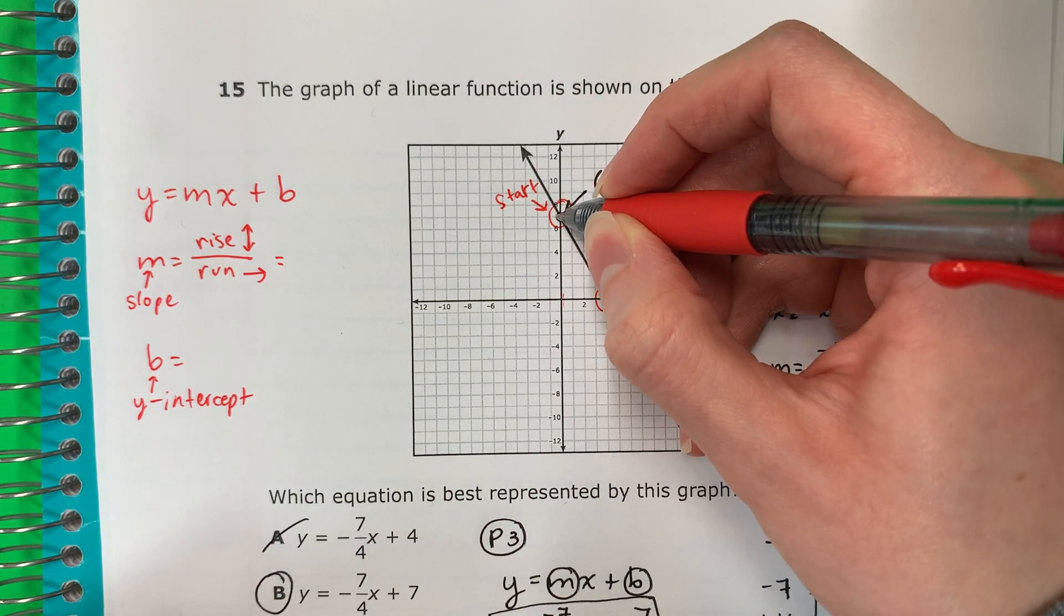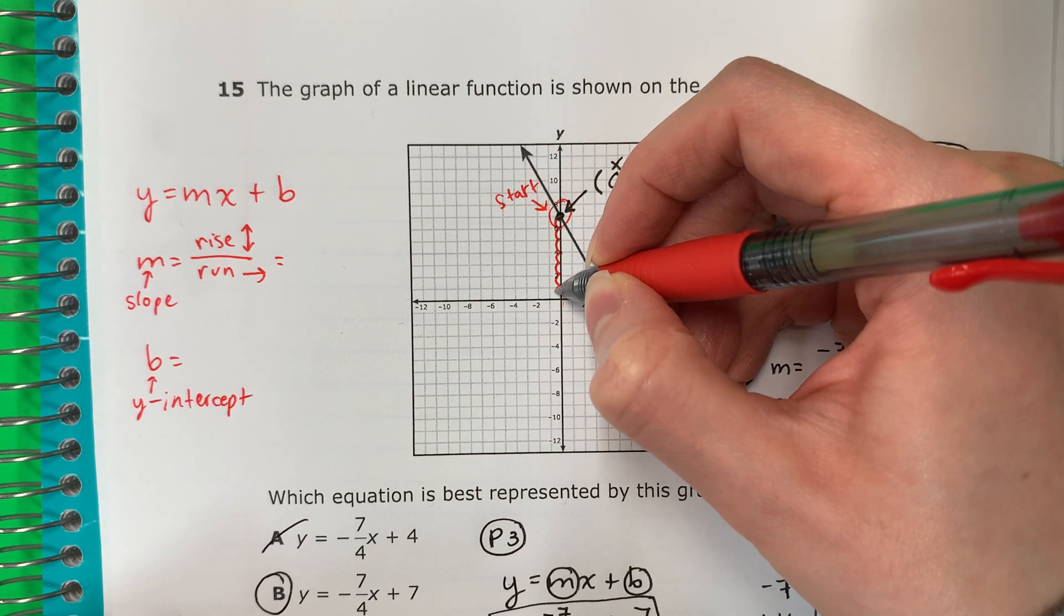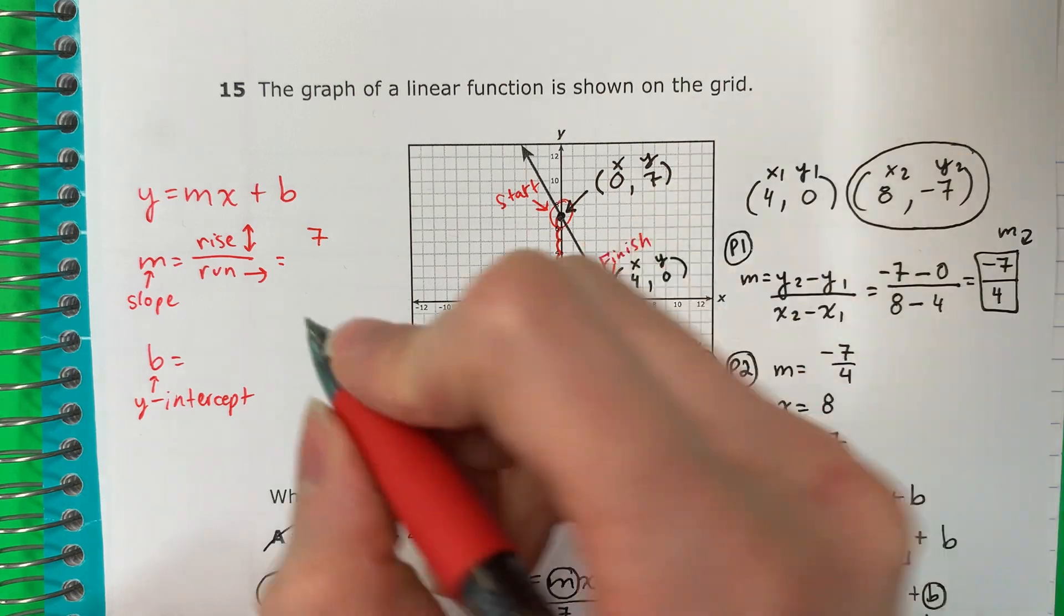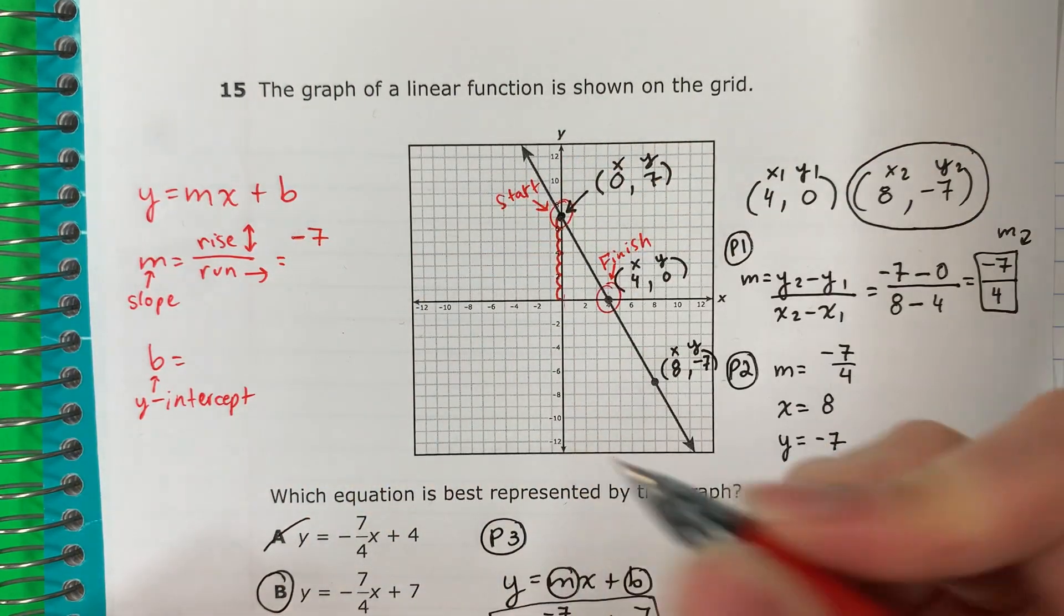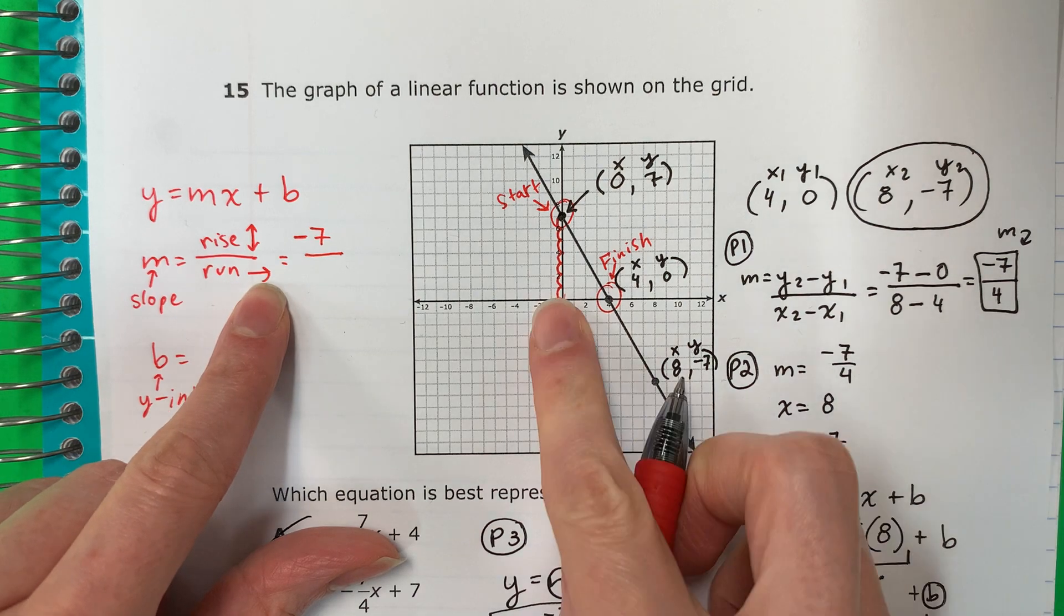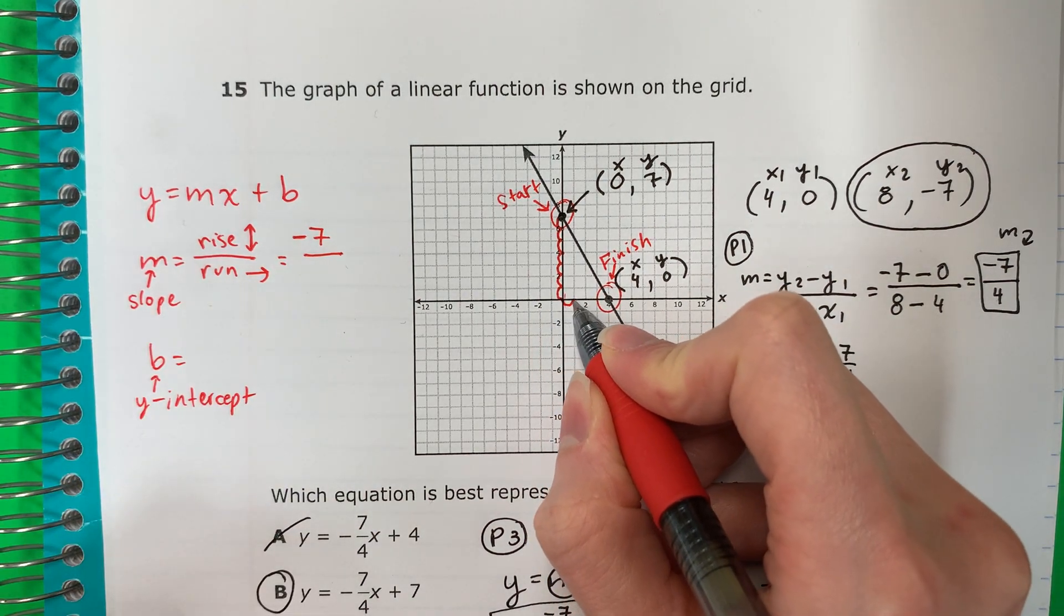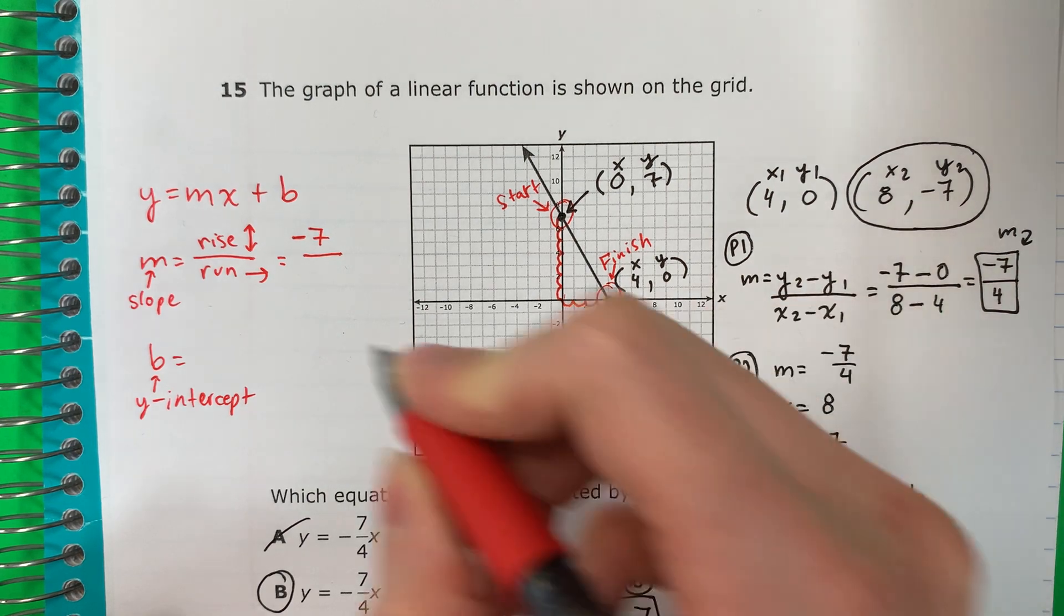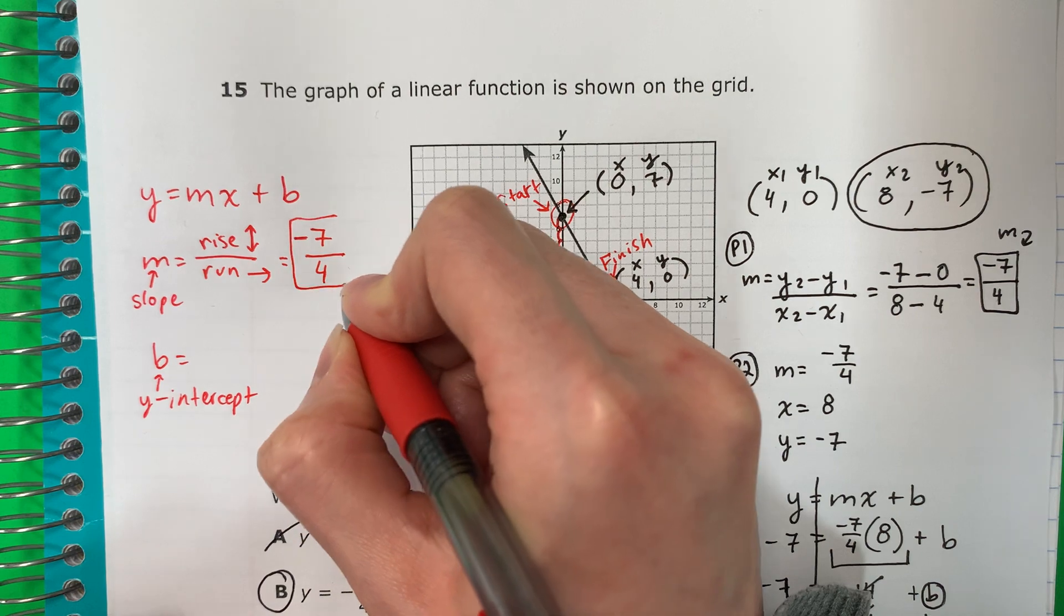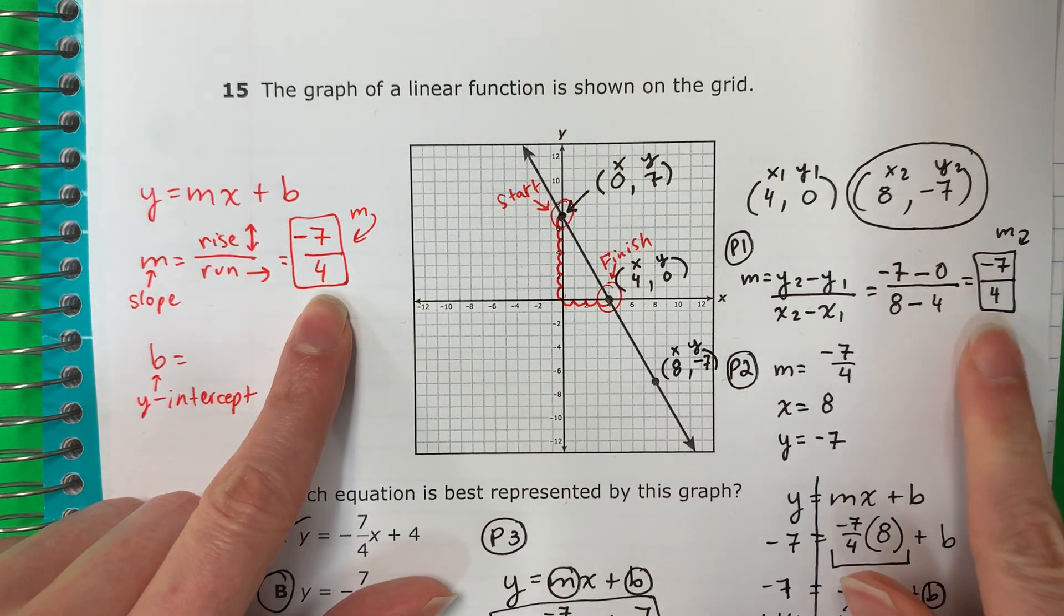Zero. One. Two. Three. Four. Five. Six. Seven. Seven. Down. Down is negative. Divided by. Now right. Let's count. Zero. One. Two. Three. Four. If you put in the calculator, it's the same. This is your M. The same. Right?